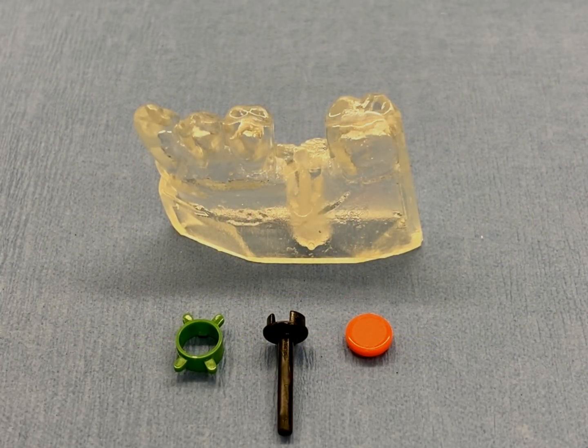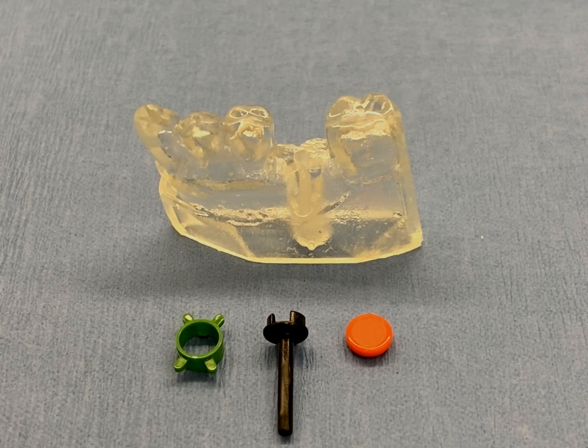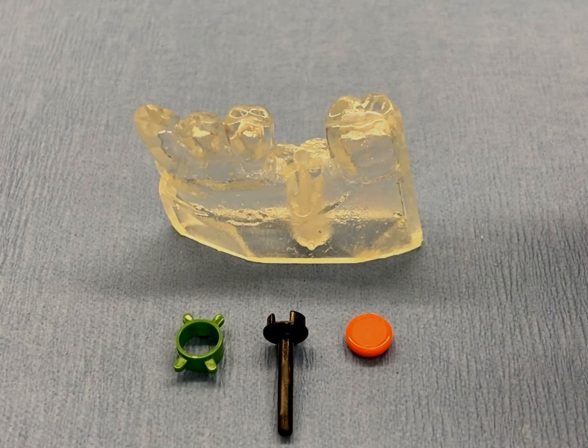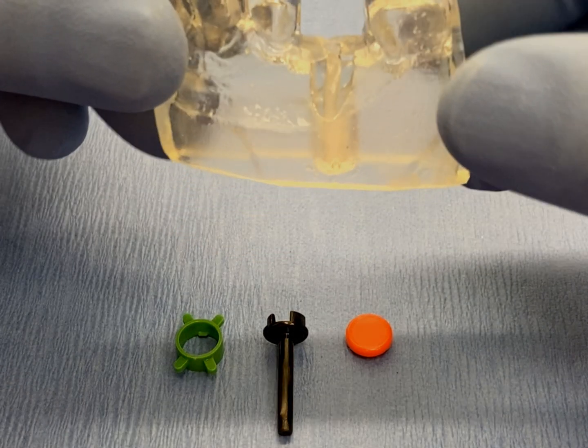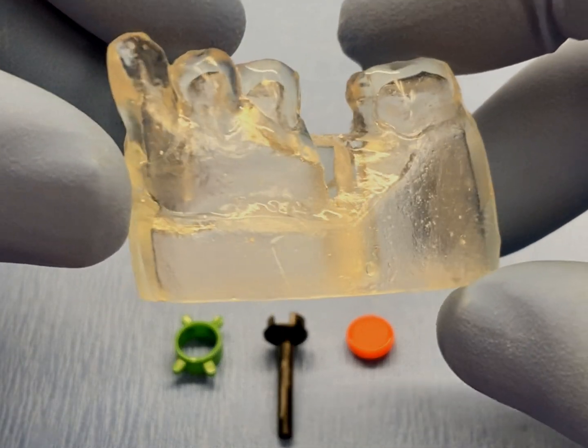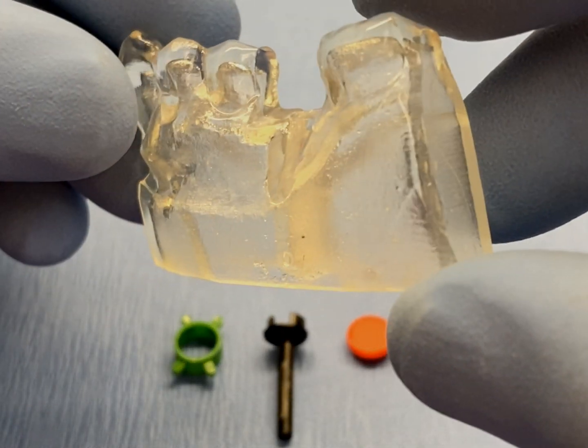Creating a GRS vacuum or pressure form surgical guide using a 3D printed GRS model will replicate the precise orientation, position, and depth of a dental implant as designed when using implant planning software.